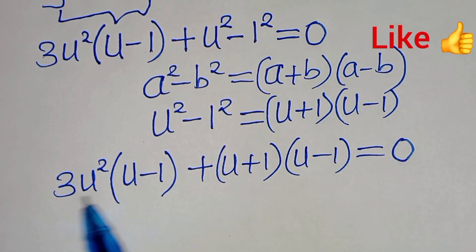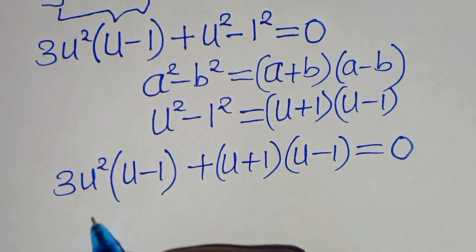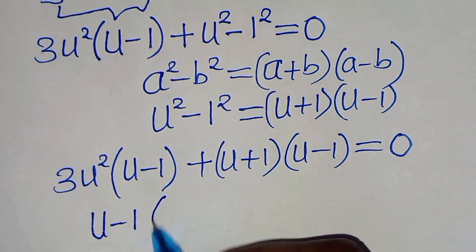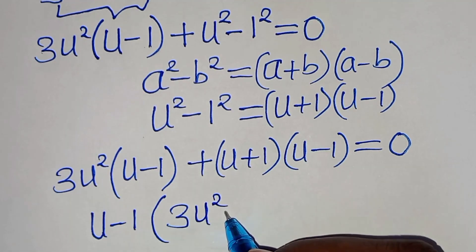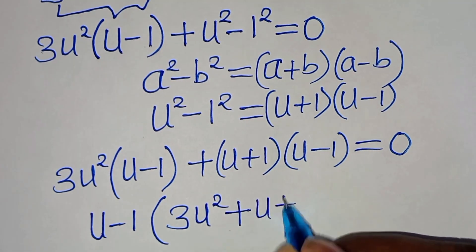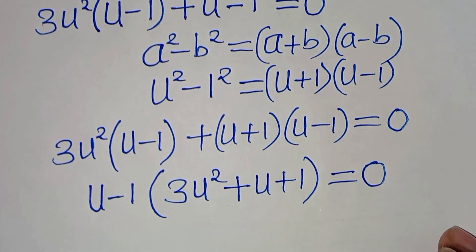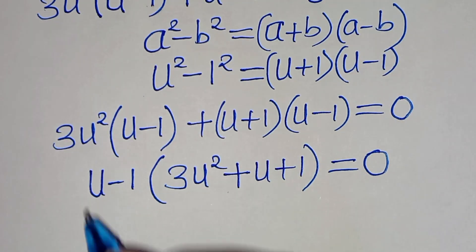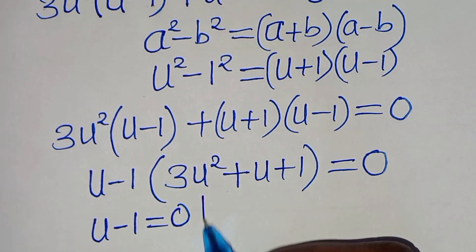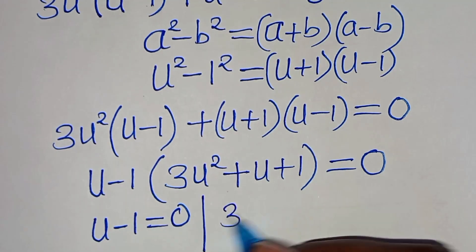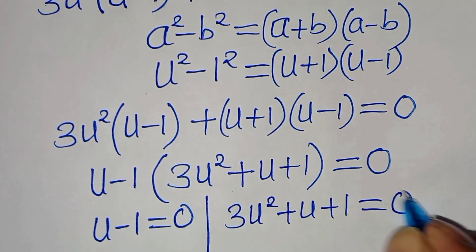From this equation here, (u minus 1) is common, so we can factor out (u minus 1), so we have (u minus 1) into the parenthesis: this is 3u squared plus u plus 1, then plus (u plus 1), this is equal to 0. So, we have two parts here: the first part is u minus 1 equals 0, and the second part is 3u squared plus u plus 1 equals 0.